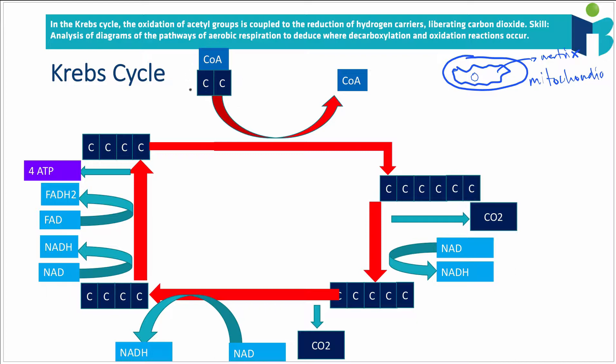So acetyl-CoA is that compound that we produced in the link reaction. And the CoA, the coenzyme A, is basically what you can think of as like a school bus. It basically just has a function of bringing this acetyl compound to the link reaction, and then it kind of lets go of it.